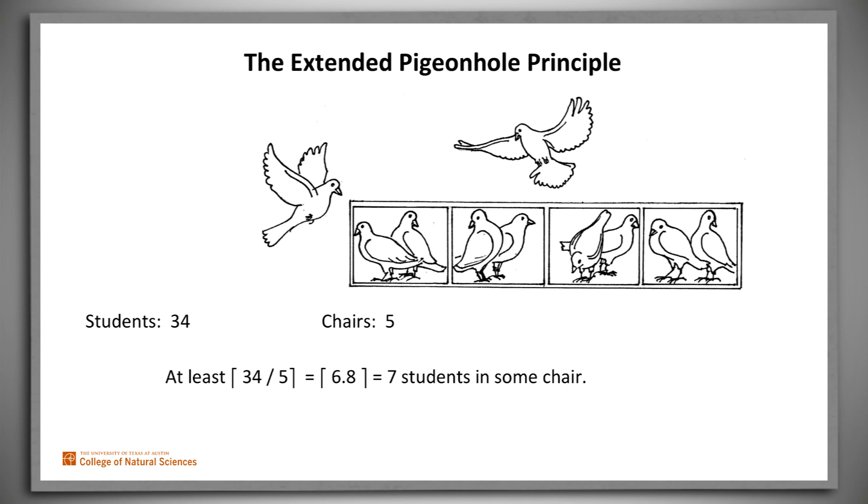Now by the way, nothing in this analysis requires that we spread the students out evenly over the chairs. We could put all the students in a single chair. But then, even more dramatically, there are at least 7 students in some chair. There are in fact 34 in that one chair. Some chair with 7 would be our best case, but certainly not the only case.